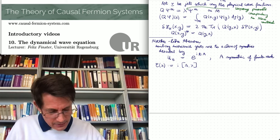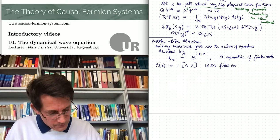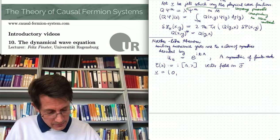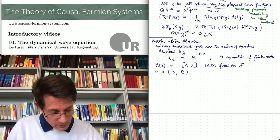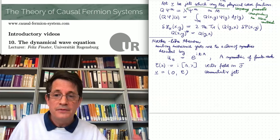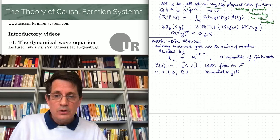We form a jet with scalar component zero and vector component given by this vector field C. This is what we call a commutator jet. We can then apply Noether's theorem, which gives us the corresponding conserved surface layer integral.